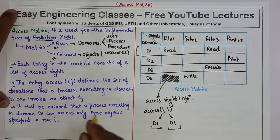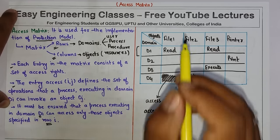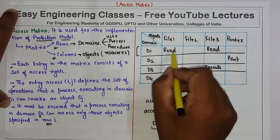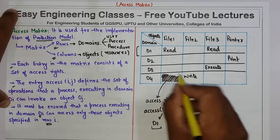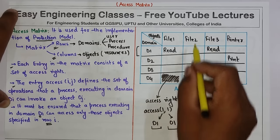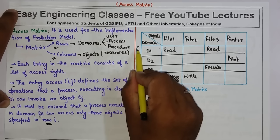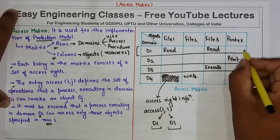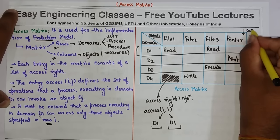Now it must be ensured that a process executing in domain di can access only those objects specified in row i. What it means is, if d1 has entries 'read' for file1 and file3, then d1 can only read file1 and file3. Even if there is a 'write' entry in another row for file2, d1 cannot issue write on file2, because each process defined in a domain can only operate on the objects specified in its own row.